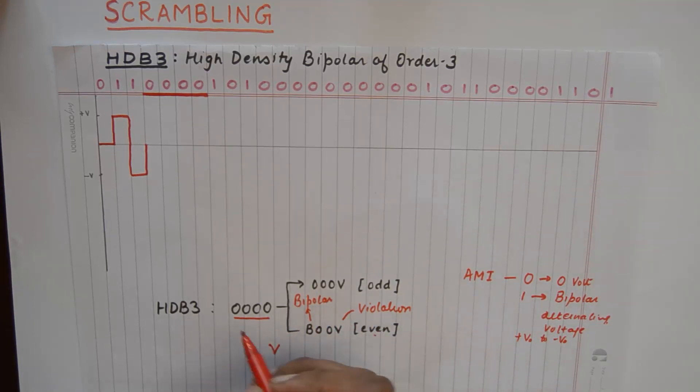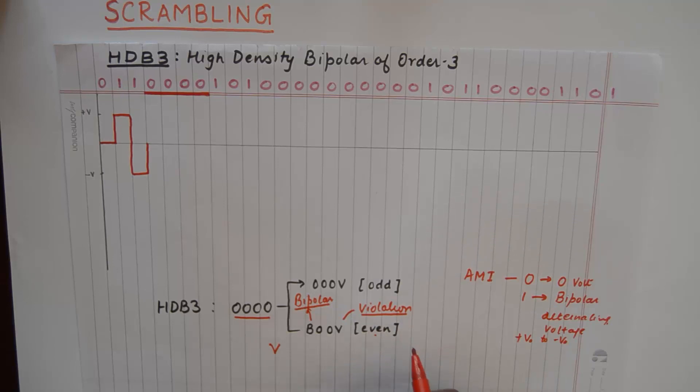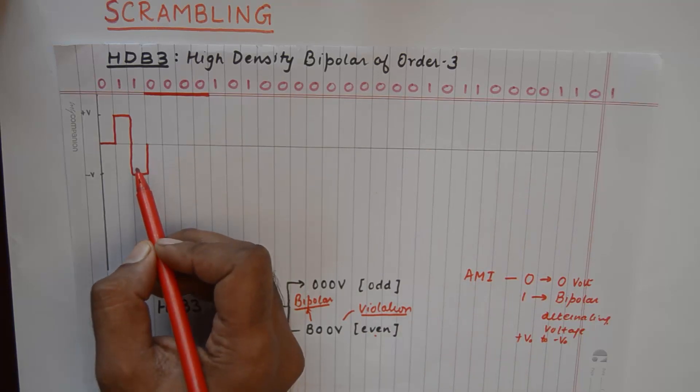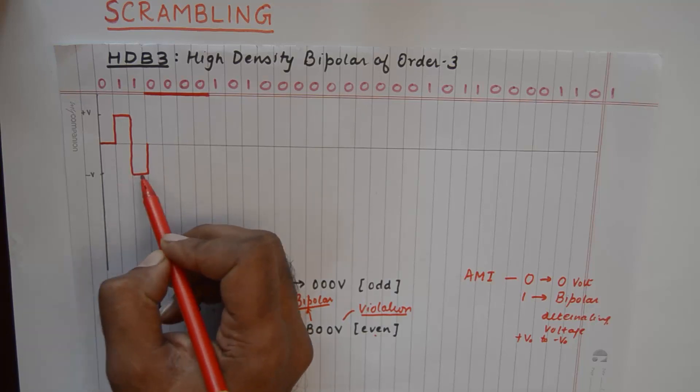So we will consider this first zero to transition from the previous one in a normal manner as it would have done in AMI. So this is a normal bipolar transition. This is a violation transition. So if we were to draw a violation of this one, it would have been the same negative V voltage.